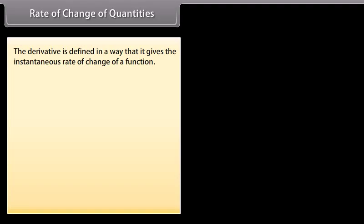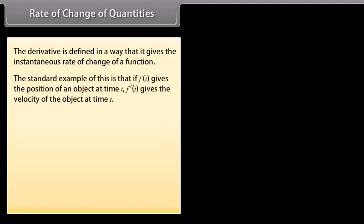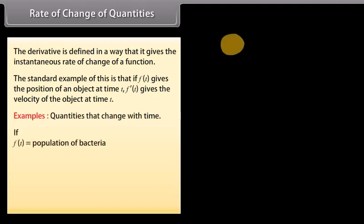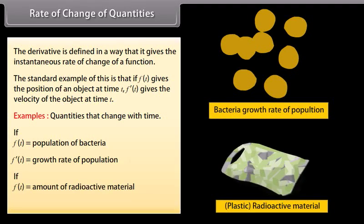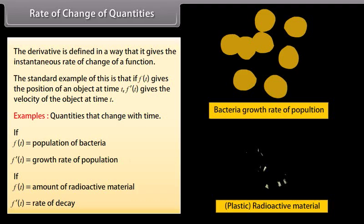Rate of change of quantities. The derivative is defined in a way that it gives the instantaneous rate of change of a function. The standard example is that f of t gives the position of an object at time t, and f dash of t gives the velocity of the object at time t. For example, if f of t equals population of bacteria, then f dash of t equals growth rate of population. If f of t equals amount of radioactive material, then f dash of t equals rate of decay.